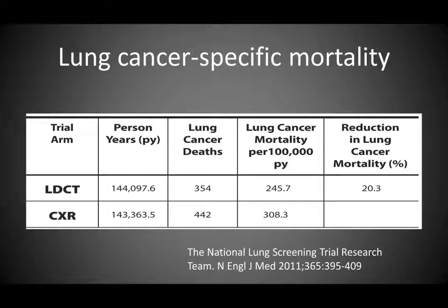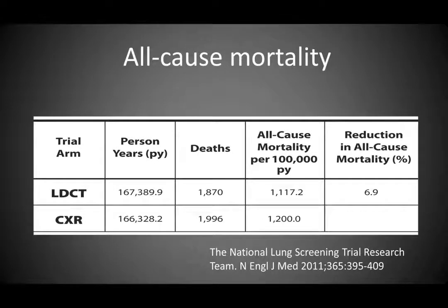Defining lung cancer-specific mortality requires calculating deaths per 100,000 person-years. In the low-dose CT arm, across 144,000 person-years there were 354 lung cancer deaths, yielding a mortality rate of 245 per 100,000 person-years, compared with 308 in the chest X-ray arm—a 20% reduction in lung cancer mortality in the CT arm. Looking at all-cause mortality, there was a 6.9% reduction in the CT arm relative to the chest X-ray arm, largely due to the reduction in lung cancer deaths, with no significant reduction in other causes such as heart disease or respiratory disease.